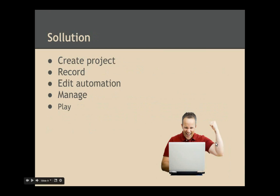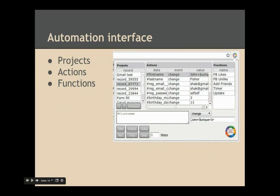The CBA solution is to create a project, record it, edit the automation, manage it, and play it. Let me describe it in detail. Here is the automation interface. The main parts of the interface are the project data grid, the actions data grid, and the functions data grid. Let's go through all of them.